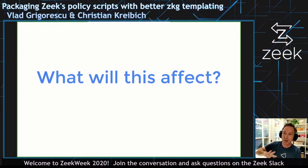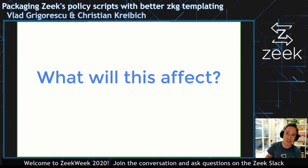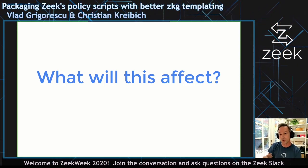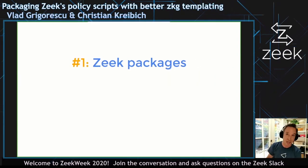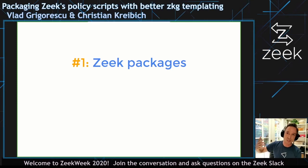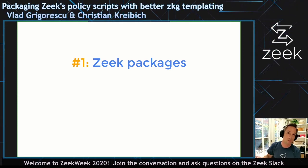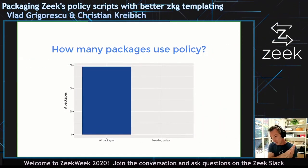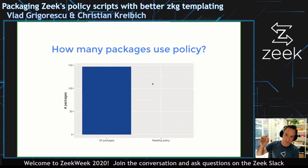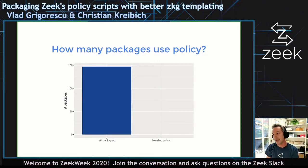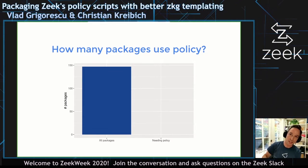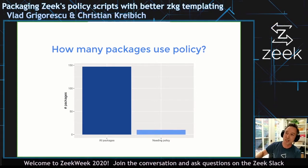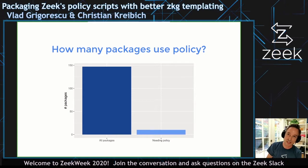Another big thing to keep in mind is what will this affect. There are four big areas where you will notice things. The first is Zeek packages — if you have Zeek packages today that rely on stuff in the policy folder, those packages will have to adapt. We have about 147 packages in our standard package source. If you look at how many of them actually use policy, the news is pretty good: it is 10. So we really don't affect a ton of packages — that's great news.